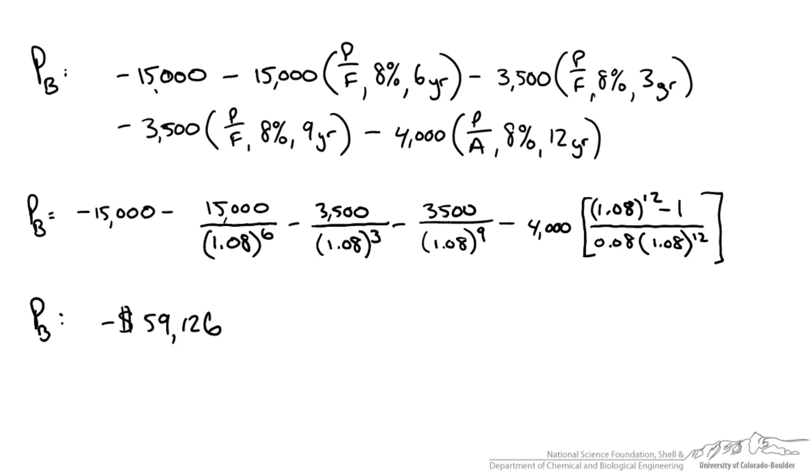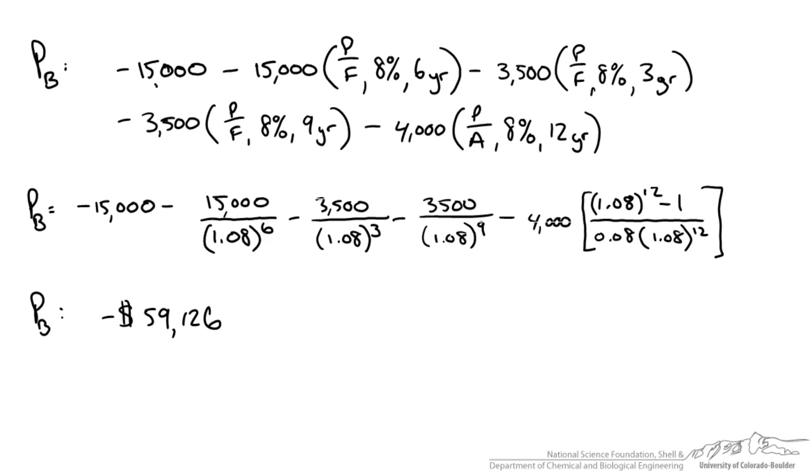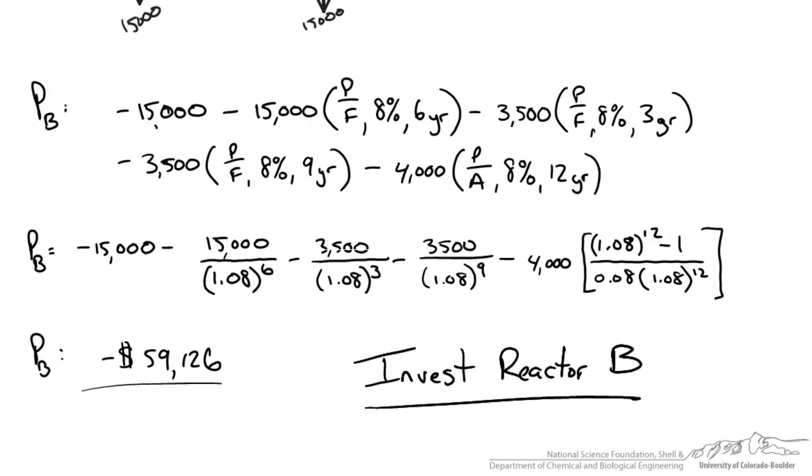So to have reactor B for 12 years, we would need $59,000 upfront as our present worth calculation. So examining these two reactors, reactor A costs us $67,000, reactor B costs us $59,000. It makes more sense to invest in reactor B based on our present worth analysis.